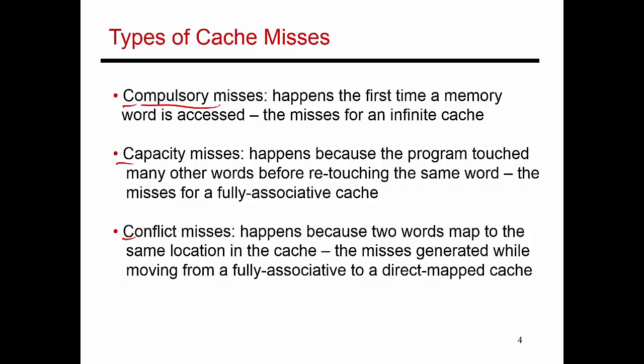One way to reduce compulsory misses is to have an aggressive prefetching mechanism. When I touch a word for the first time, I bring an entire 64-byte block into my cache. Several words that haven't yet been touched are already sitting in the cache. By bringing in a large block, I'm using a default prefetching policy — don't just bring in four bytes, bring in neighboring bytes as well — thereby avoiding compulsory misses on those other words.